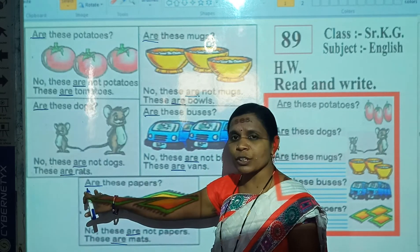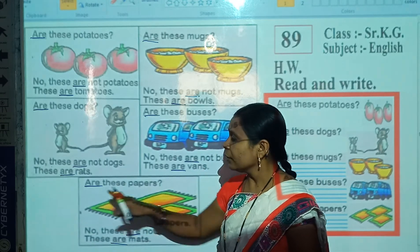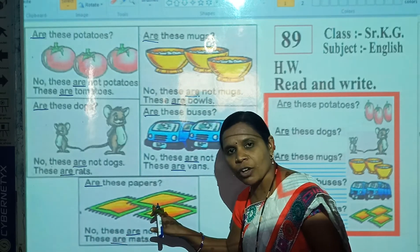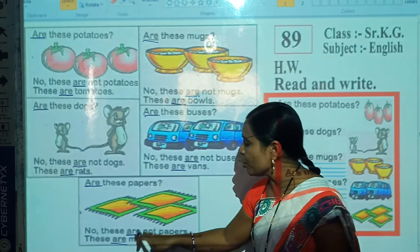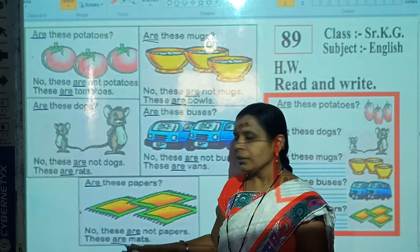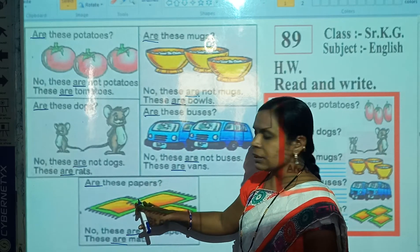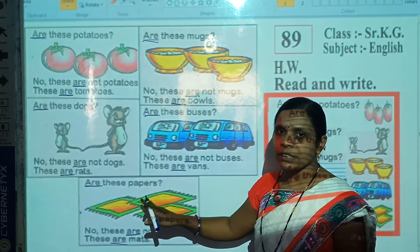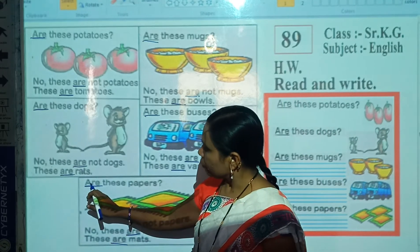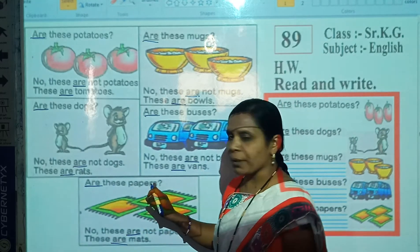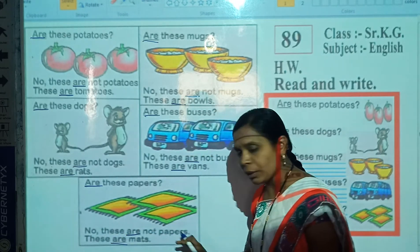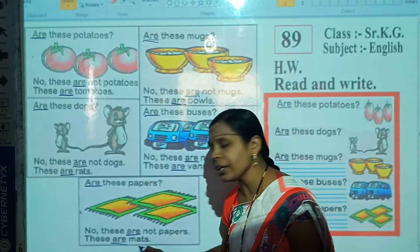When we ask a question about these objects, we use 'are'. And when we are replying about these objects, we also use 'are'. Both times we use 'are', because these are more than one object or many objects. Now read: Are these papers? No, these are not papers. These are masks.